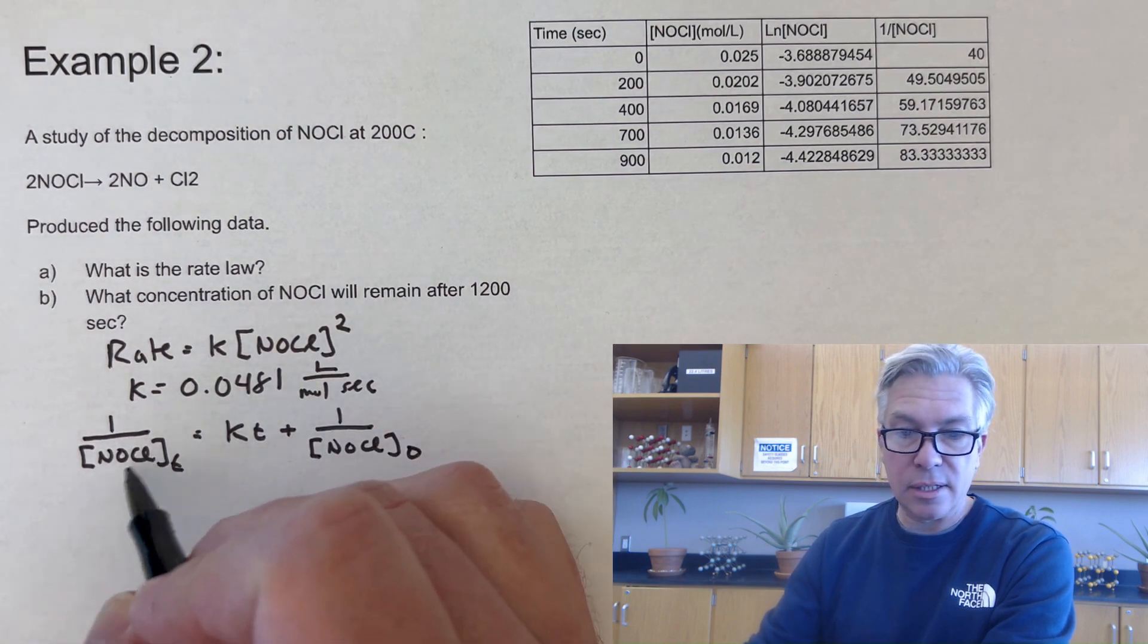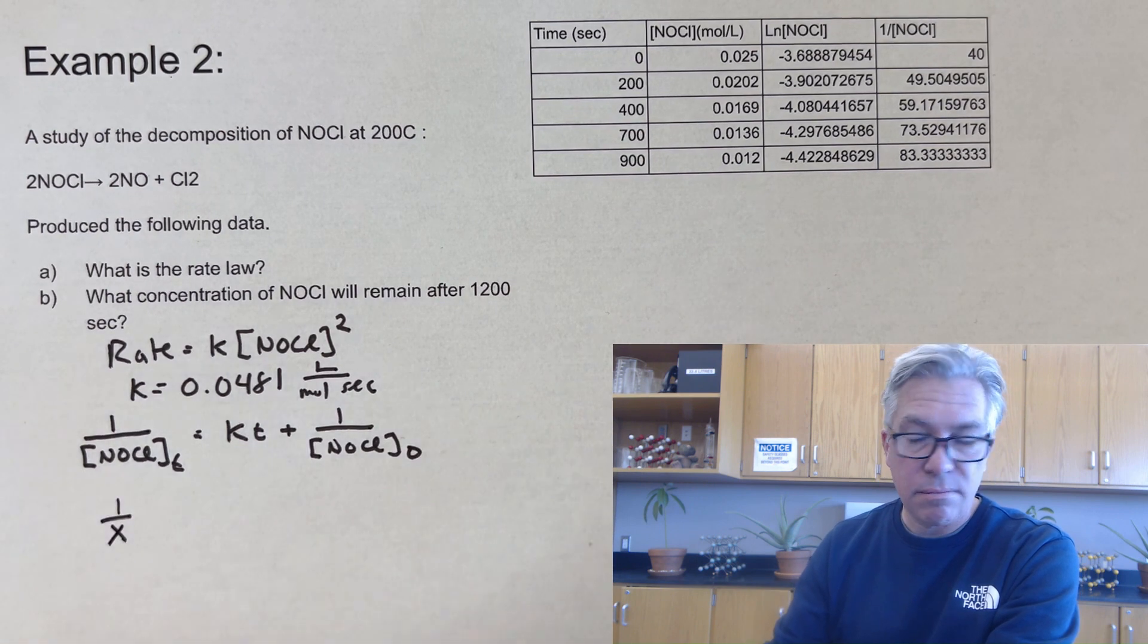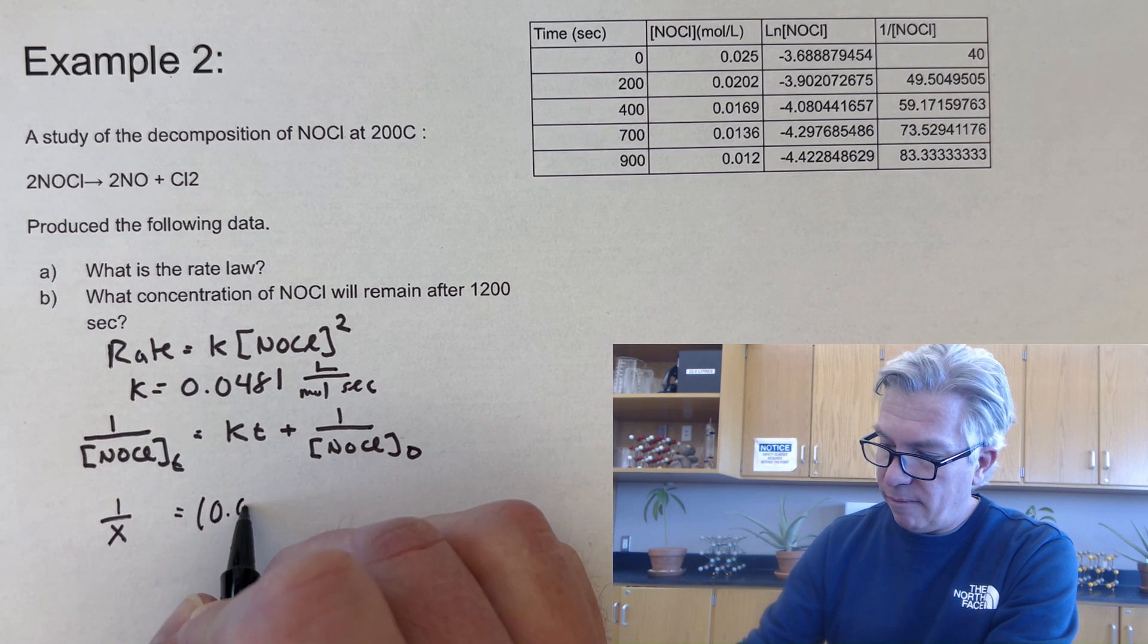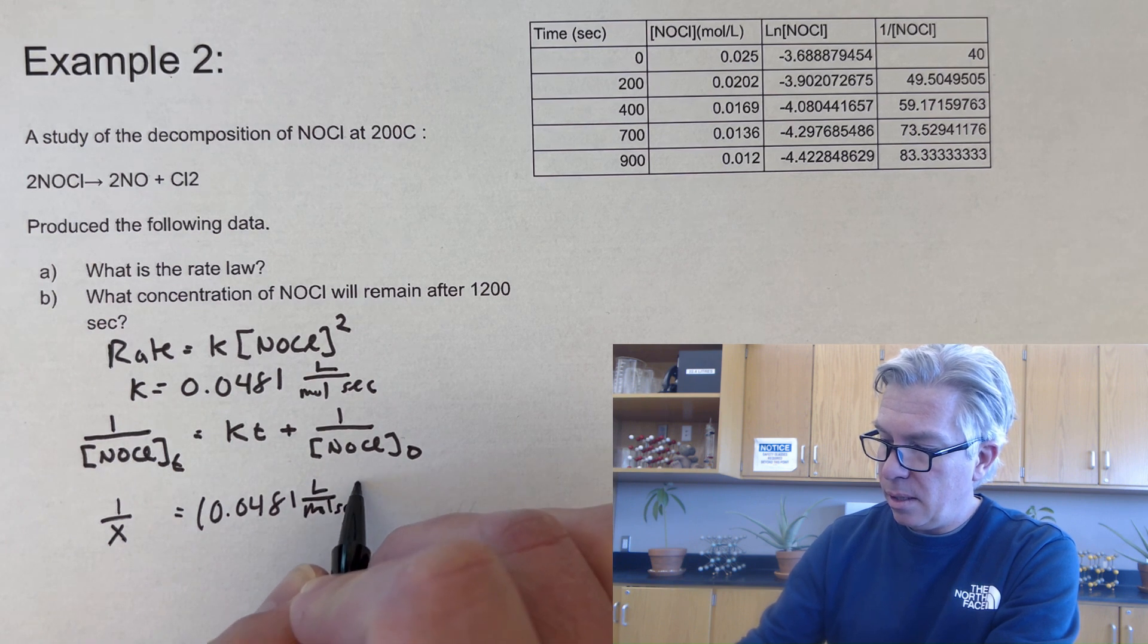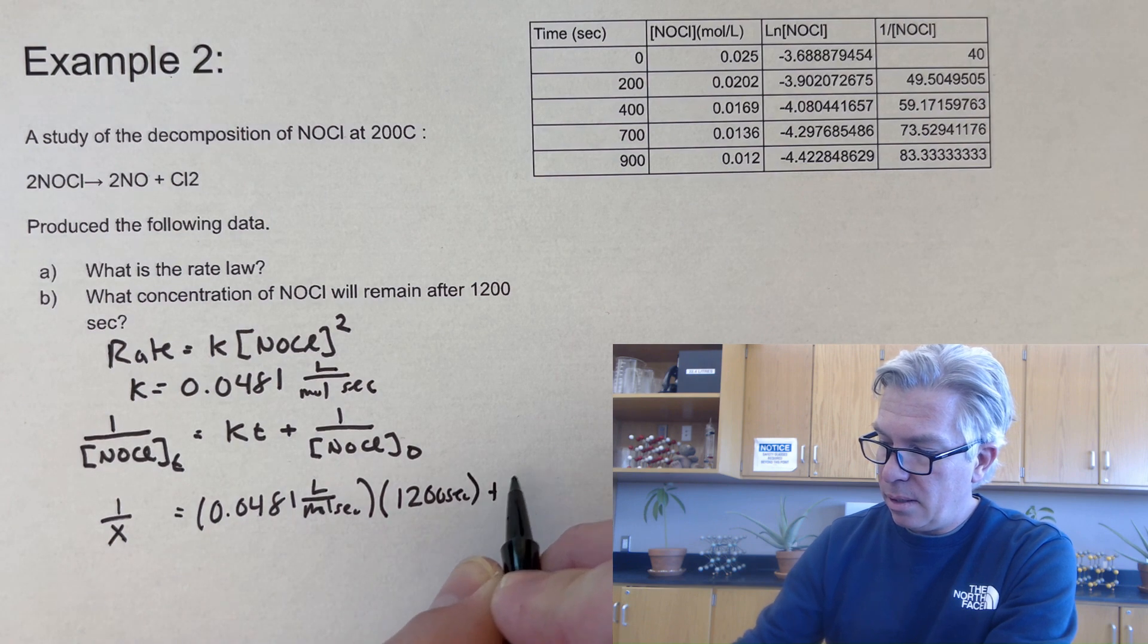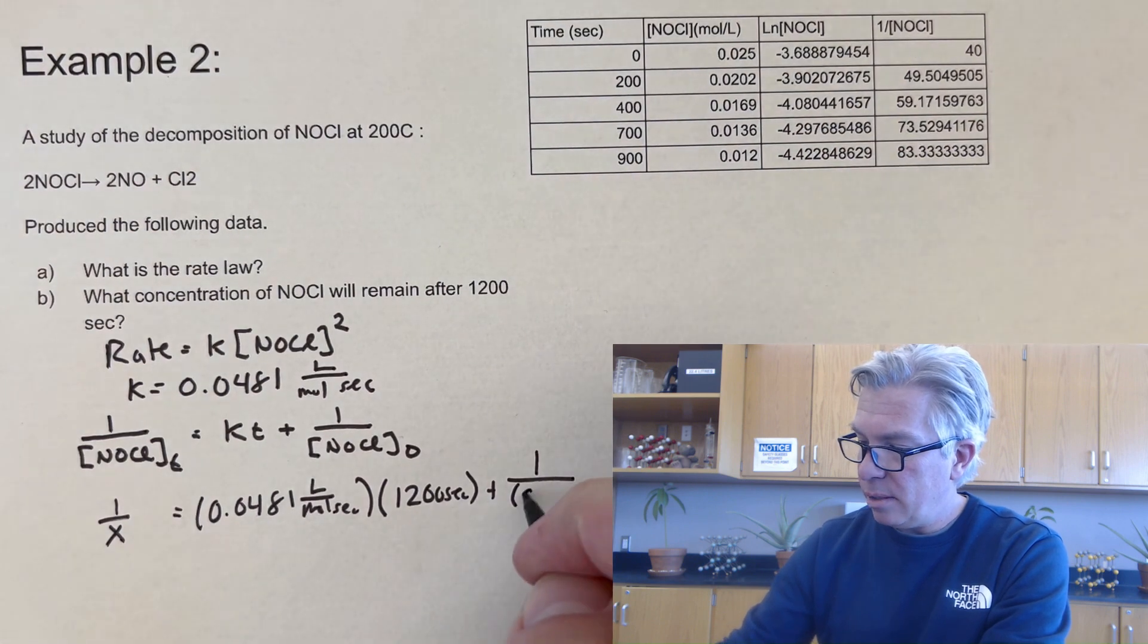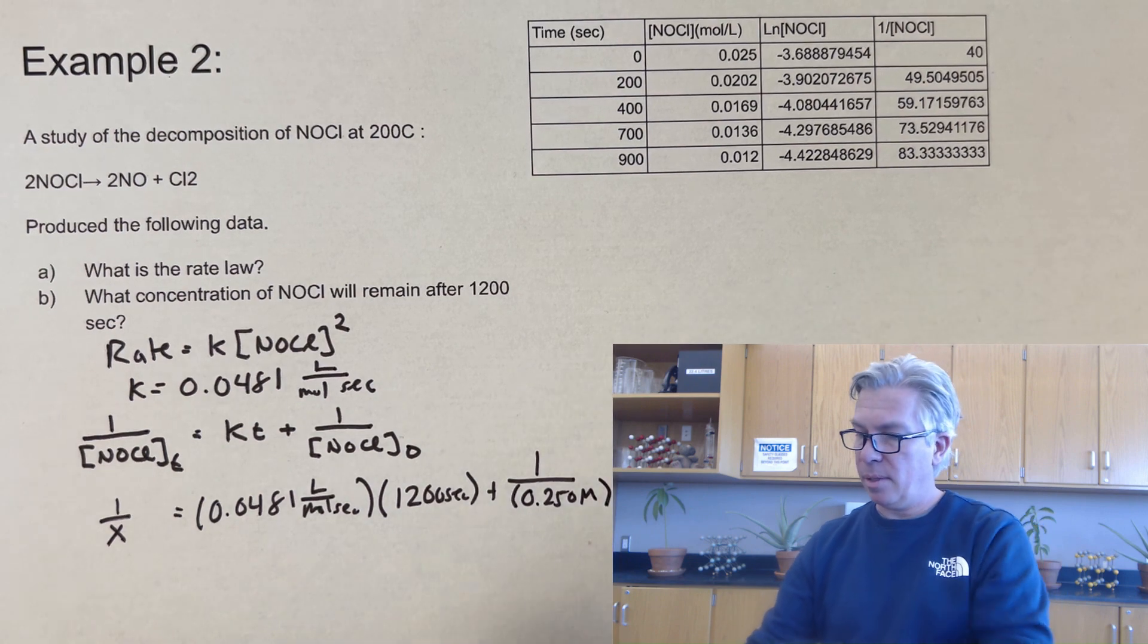That's going to be equal to kT plus one over the NOCl at time zero. And then I'm going to go ahead and plug everything. And now I need to solve for this. This is what the question is asking me. So let's call that X because we can equals k. Let's plug in the rate constant 0.0481 liters per mole second. The time they've given me is 1200 seconds.